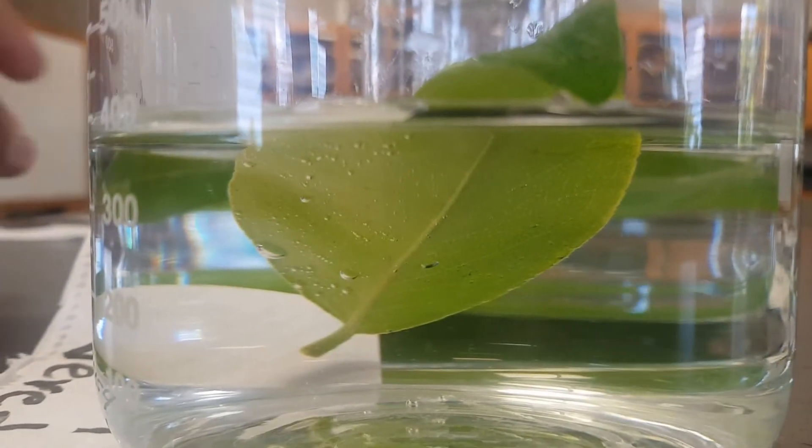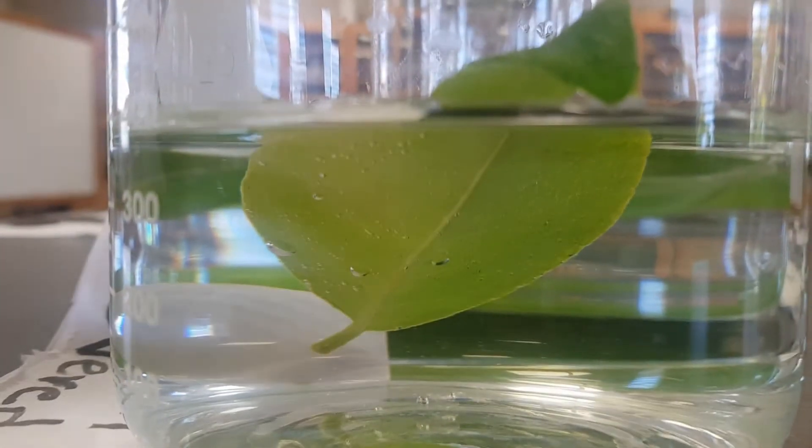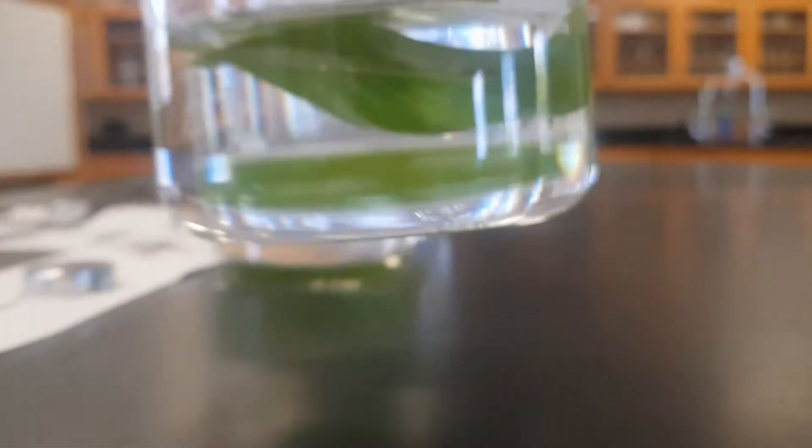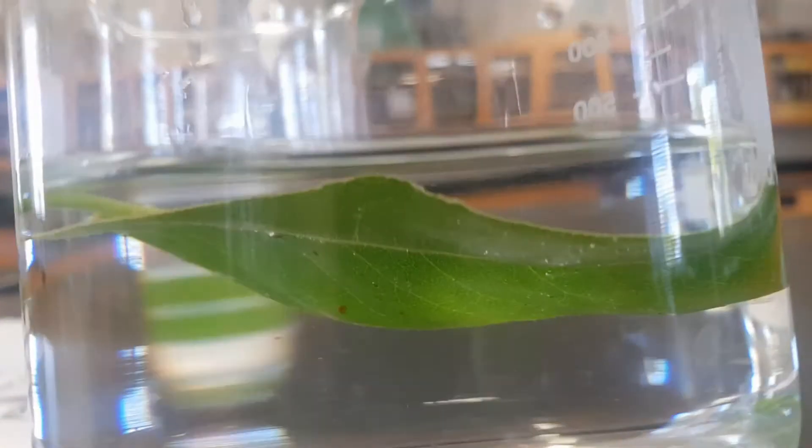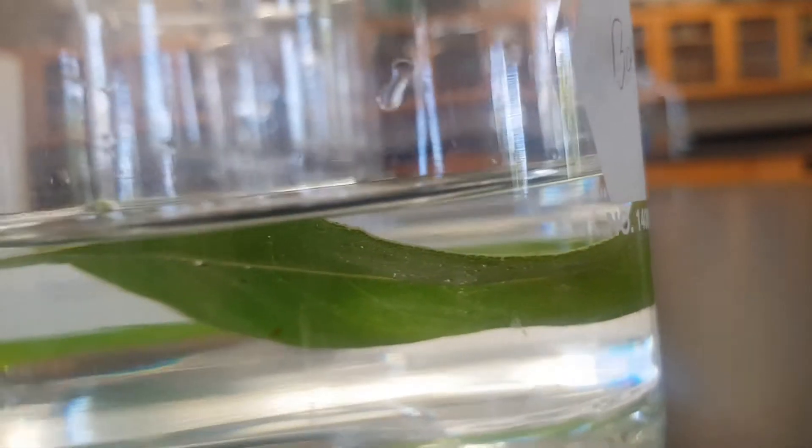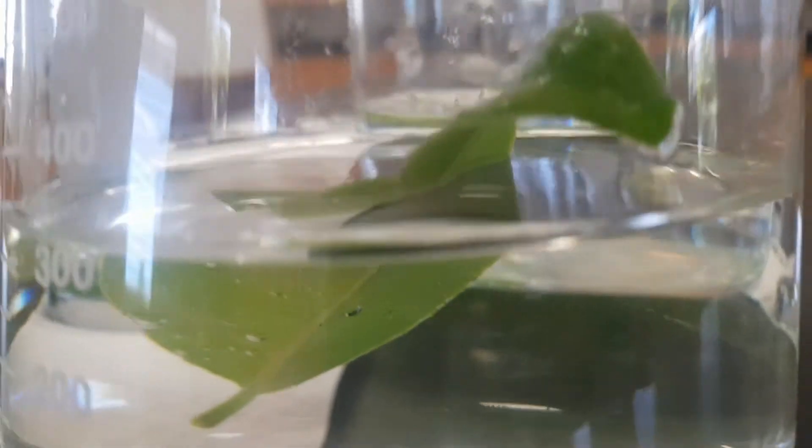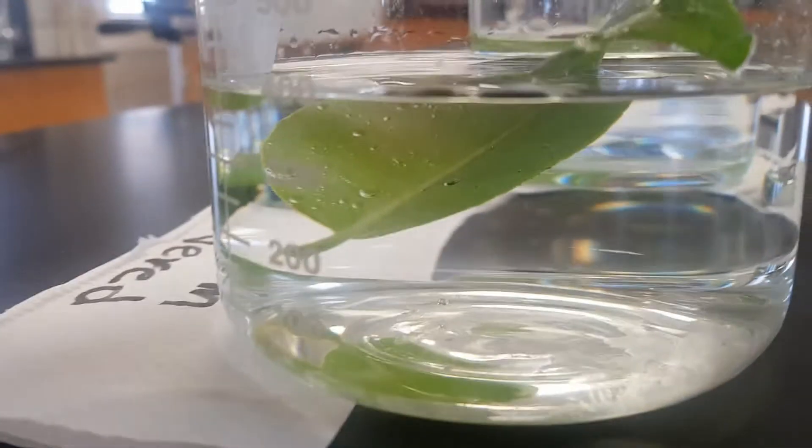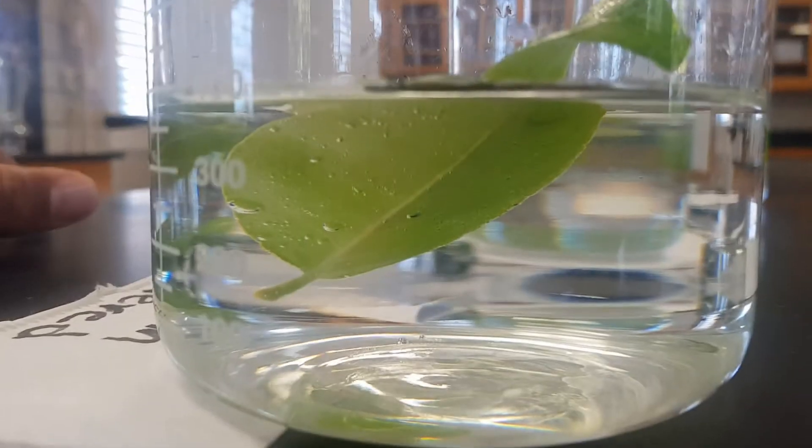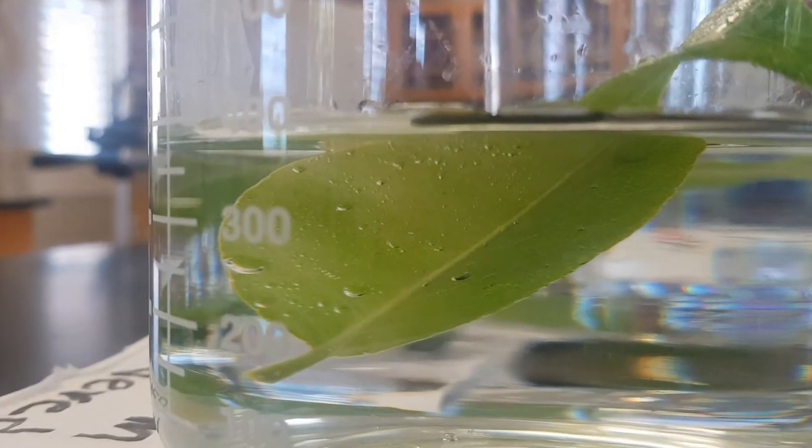If you notice under the leaf, you'll see a lot of bubbles under this beaker. Now this leaf, you'll see only a few bubbles there. That's the top of the leaf. Notice the bottom of the leaf compared to the top. This leaf, the bottom, has a greater amount of bubbles compared to the top of the leaf. Let's zoom into that. Notice you see the bubbles there. Awesome.